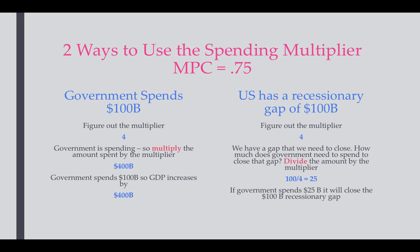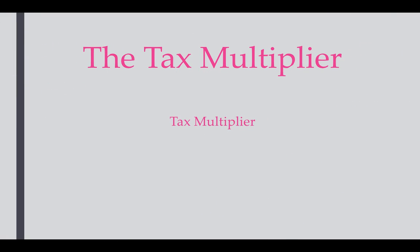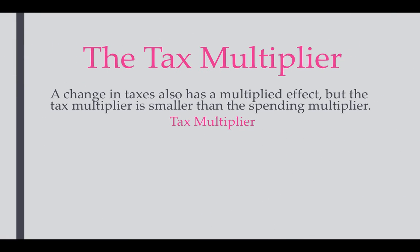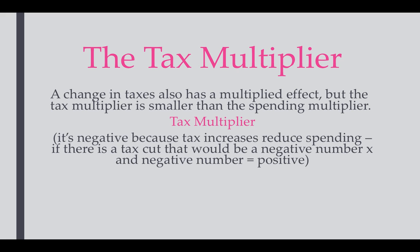You need to be able to figure out what's being asked and how to use the multiplier. The tax multiplier is the same idea, but the problem is that not all of a tax cut gets spent. So the tax multiplier is always going to be smaller than the spending multiplier. The tax multiplier is also a negative number, because an increase in taxes reduces spending.